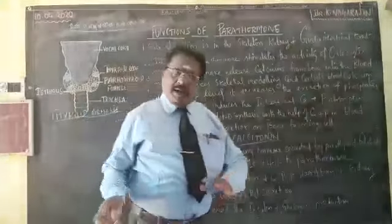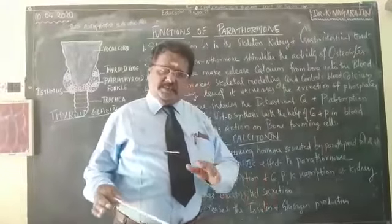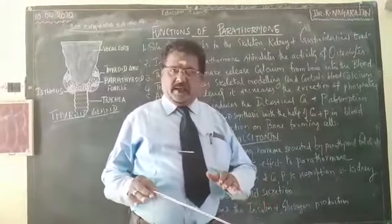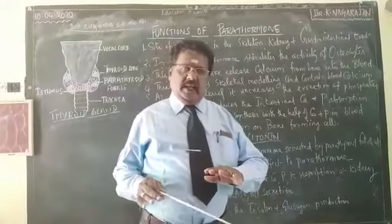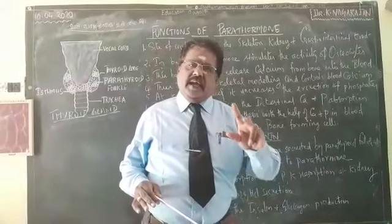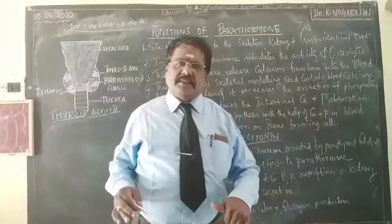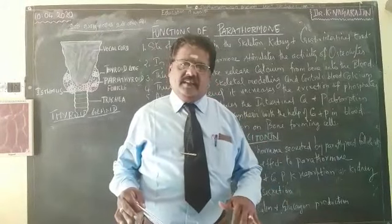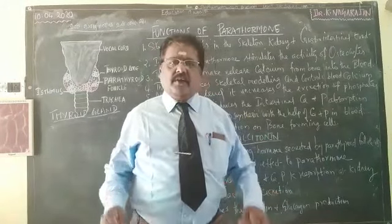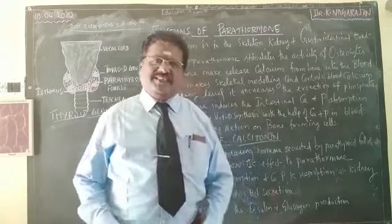Calcitonin performs all opposite or anti-actions against parathormone. Therefore, parathormone and calcitonin play a balanced role together, mainly maintaining calcium, phosphate, and potassium metabolism in the blood circulation. It is therefore a very important metabolic hormone. Thank you very much.